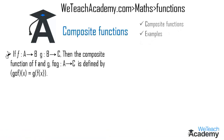If f is a function from A to B and g is a function from B to C, then the composite function of f and g — that is g∘f from A to C — can be defined by g∘f(x) = g(f(x)).